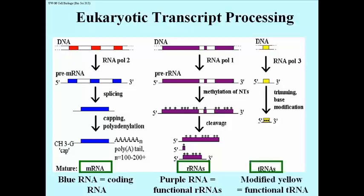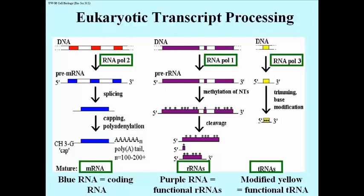Not shown here is the transcription of the remaining ribosomal RNA, which is also catalyzed by RNA polymerase 3 — that is the 5S ribosomal RNA of eukaryotes. The mature RNAs are boxed at the bottom in green, and the RNA polymerases that do the specific catalysis are boxed at the top.